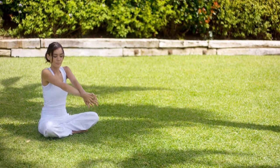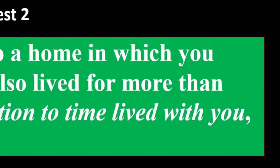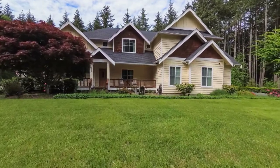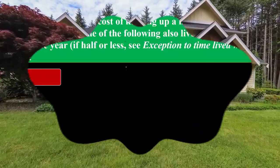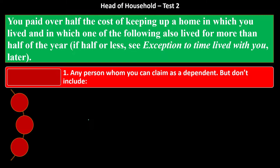Head of household test number two — remember, this is an OR, not an AND. So one of the two tests would need to be met to move from single to head of household in a non-married status. Test number two: you paid over half the cost of keeping up a home in which you lived, and in which one of the following also lived for more than half of the year. If half or less, see exceptions to the time lived with you. Any person whom you can claim as a dependent — that's the general rule, but there are exceptions.